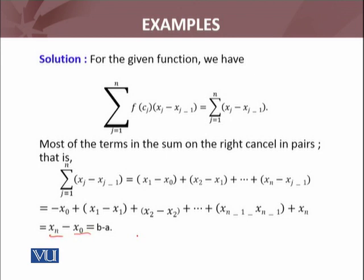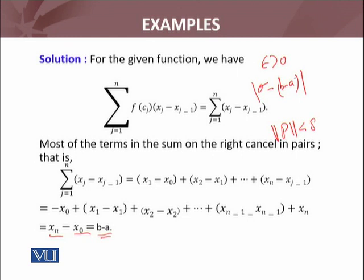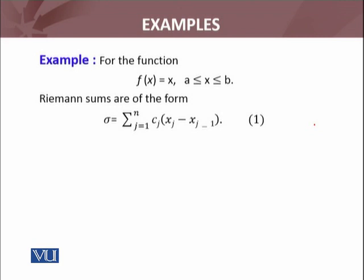By definition of the Riemann integral, given epsilon > 0, we need |sigma - L| < epsilon, where L is our candidate value b minus a. Since sigma = b - a and L = b - a, the difference is exactly zero. This is automatically less than any epsilon > 0. So we can take delta = epsilon, and the function f(x) = 1 is Riemann integrable. Now consider the second function: f(x) = x.